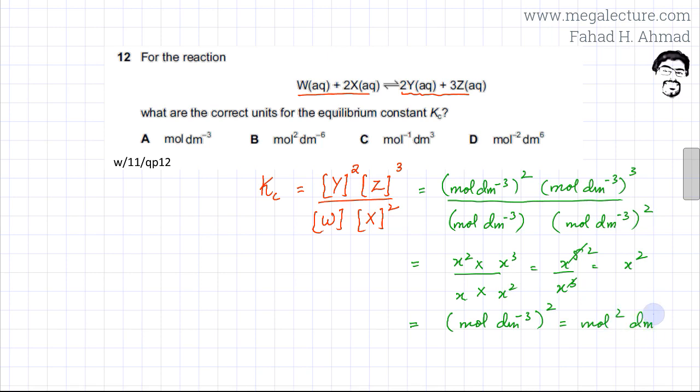If I open the brackets, so according to this mol² dm⁻⁶, the correct option is going to be option B, which is your correct answer.